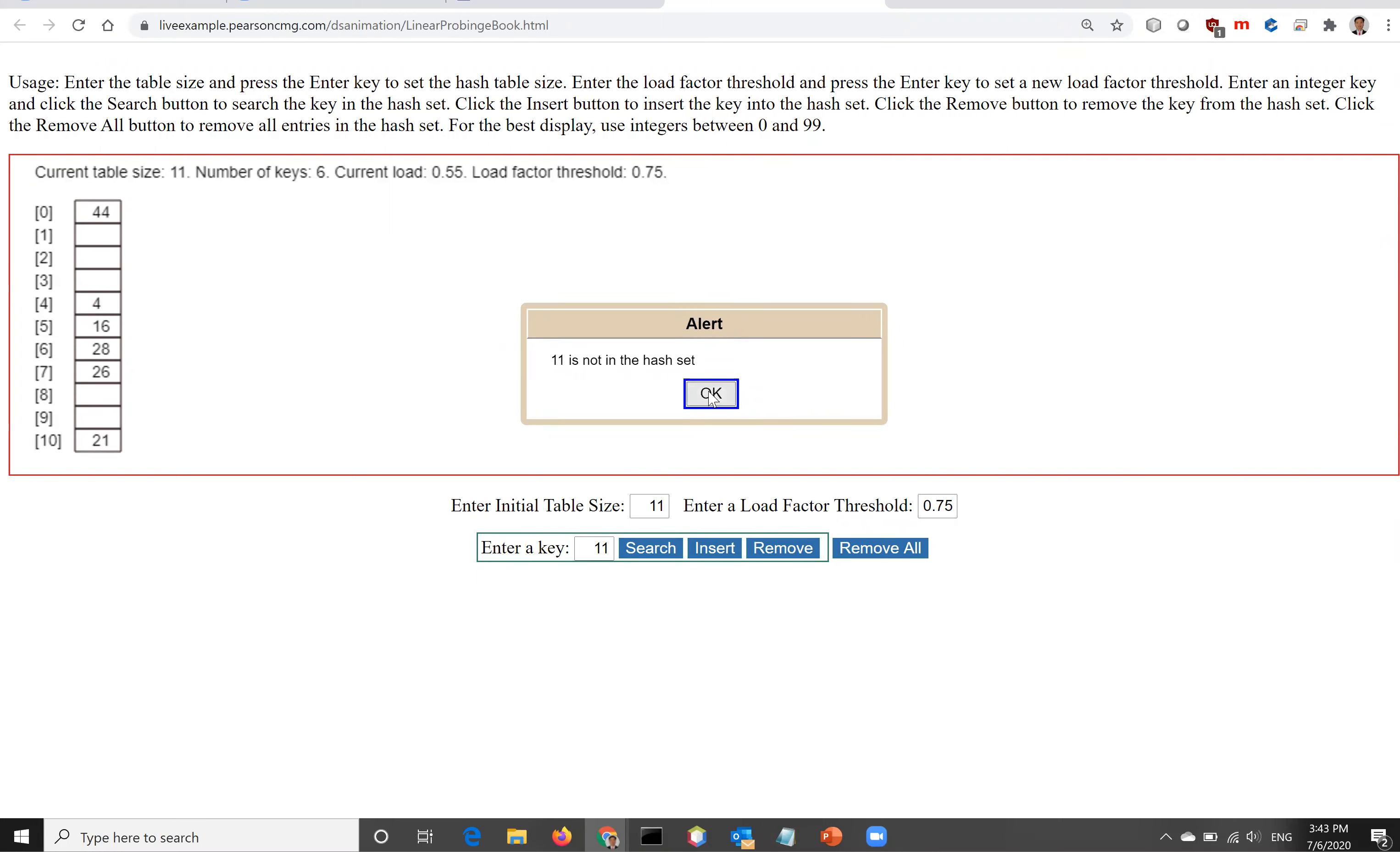Let's search for 11. 11 is not in the hash set. What we do here is go to 11, it's mapped to this index zero, and this is 44, not 11. The next one is empty, so there's no more to search. So 11 is not in the set.